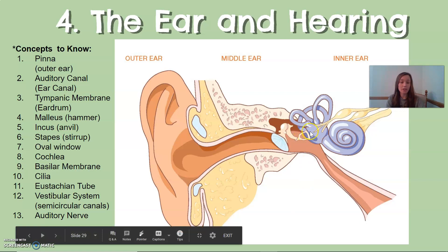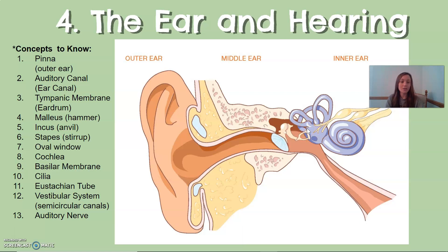The stirrup is attached to the inner ear by a membrane called the oval window. The oval window allows those vibrations to move into the cochlea. The cochlea is a snail-like, coiled tube structure, and this is where transduction occurs in the ear — the changing of stimulus energy into an action potential that can be passed through a nerve to the brain.